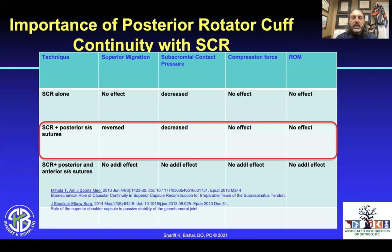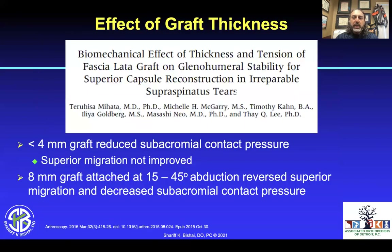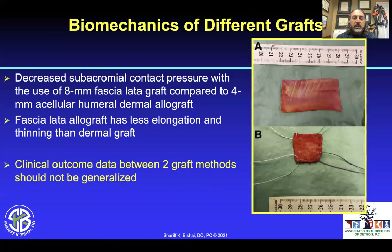When looking at the biomechanical effects, graft thickness matters. Less than 4-millimeter grafts reduced subacromial contact pressure but did not fix superior migration. Whereas the 8-millimeter graft used by Mahata's group produced a greater decrease in contact pressure and also prevented superior migration. He took a large piece of tensor fascia lata and doubled it on itself to make it about 8 millimeters. Clinical outcome data of the two graft types cannot really be compared.